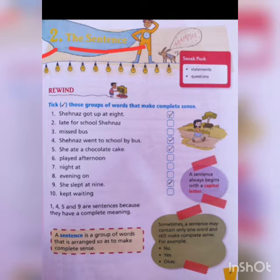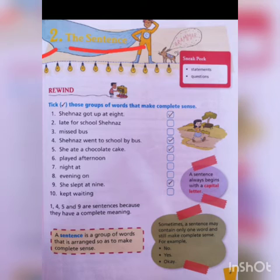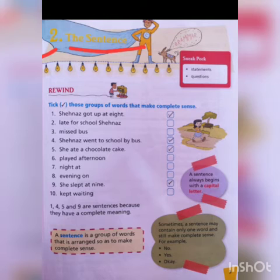For example: 'I am a student of class 3rd.' How many words are in this sentence? There are total 5 words in this sentence.